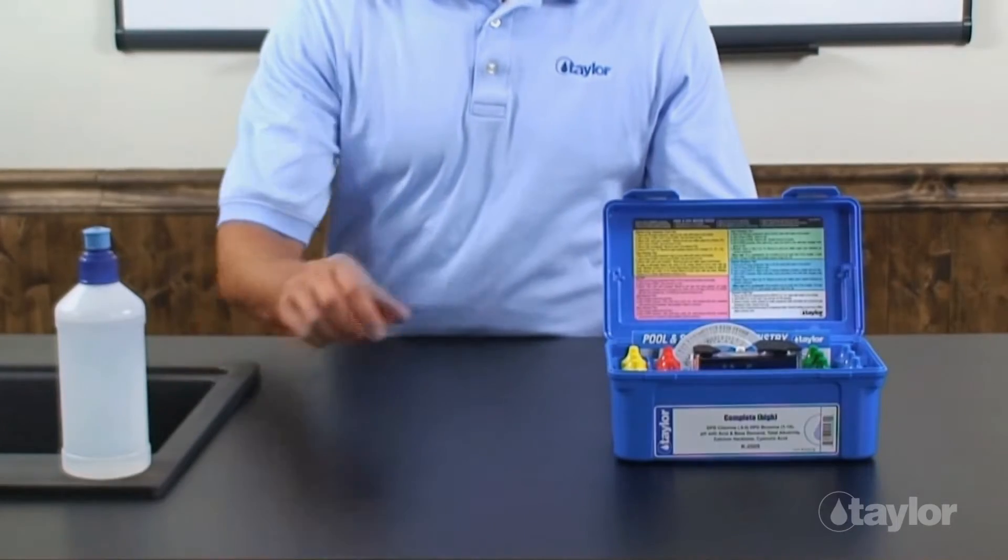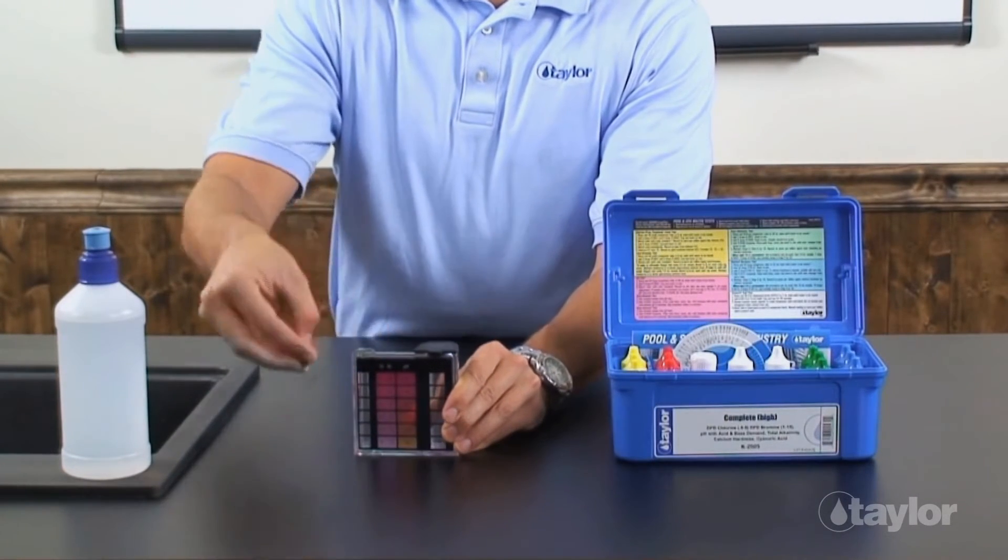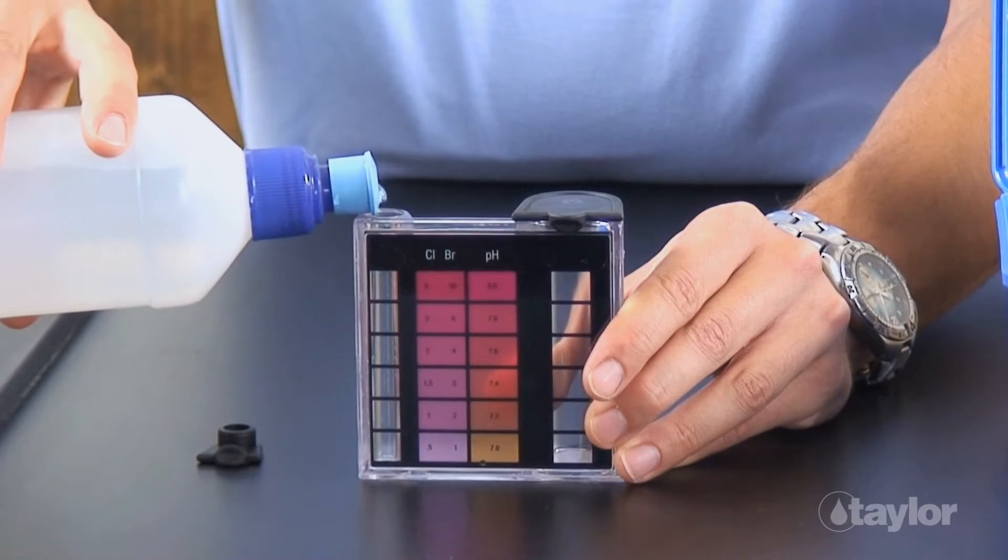When testing either chlorine or bromine, if the color is off scale, repeat the test using a 4.5 mL sample diluted to the 9 mL mark with tap water.